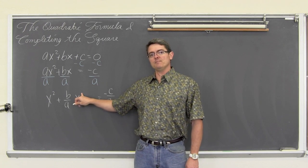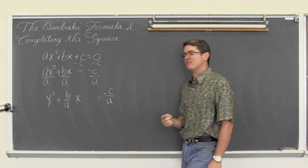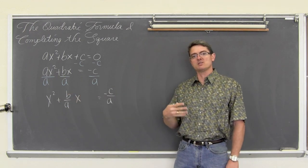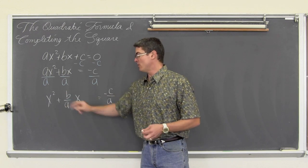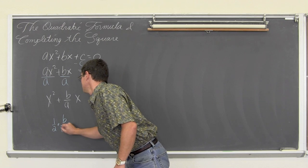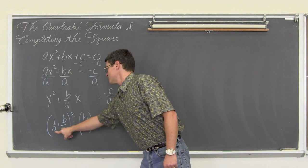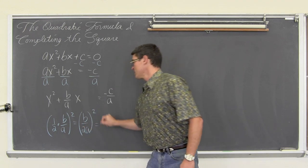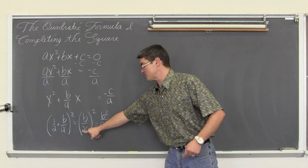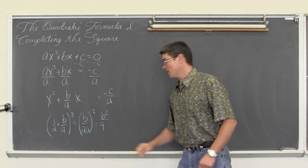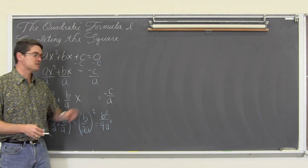Now completing the square: the process is you find that single degree term — what is in front of it is the coefficient, here b over a. We take half the coefficient of the single degree term and square it. So one-half times b over a gives us b over 2a, and we square that ratio to get b squared over 4a squared. That value is going to be added to both sides of the equation.